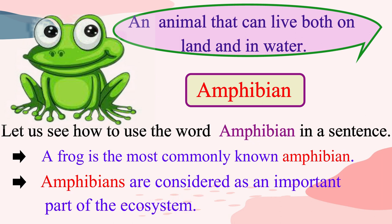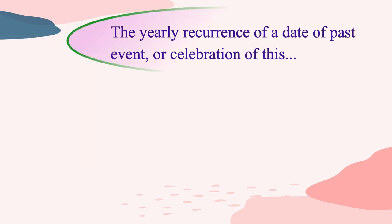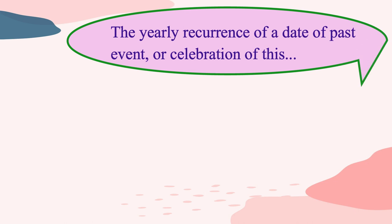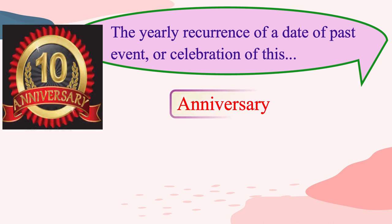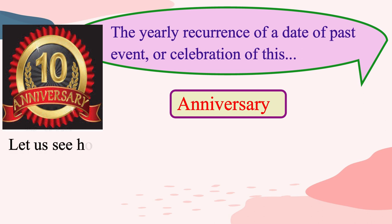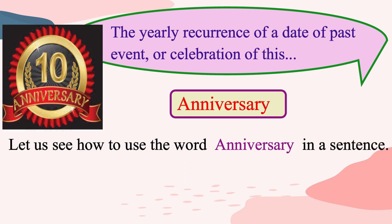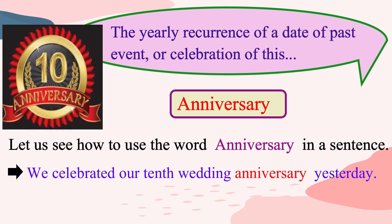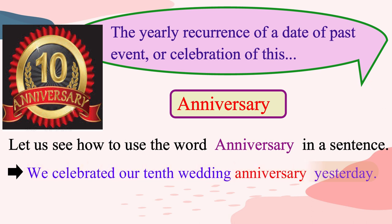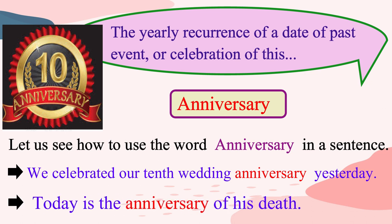Let us see the next group of words. The yearly recurrence of a date of a past event, or celebration of this. An anniversary is the date on which an important event took place in a previous year and may also refer to the celebration of that event. We celebrated our 10th wedding anniversary yesterday. Today is the anniversary of his death.